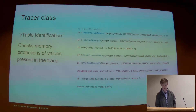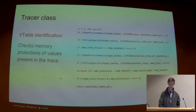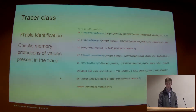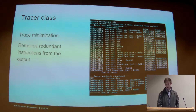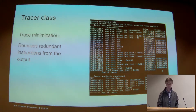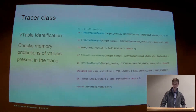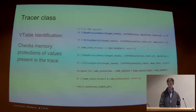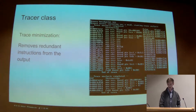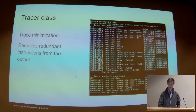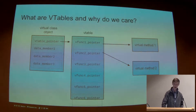One other thing the tool does that I haven't touched on yet is V-table identification. Going back to the output, you see the last column outputting a potential V-table pointer that's going to be located at values along the trace. It does that by checking the memory protections of values present in the trace — checking the memory protections on these addresses and also the addresses those point to.